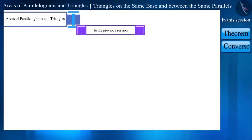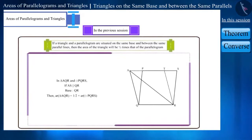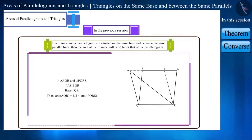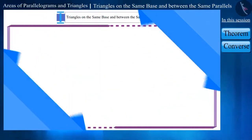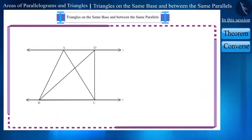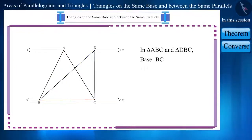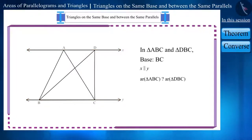Friends, we have already learned about triangles and parallelograms situated on the same base and between the same parallel lines. Moving ahead, if we are given a figure in which two triangles are situated on the same base and between the same parallel lines, then what can you tell about their area?